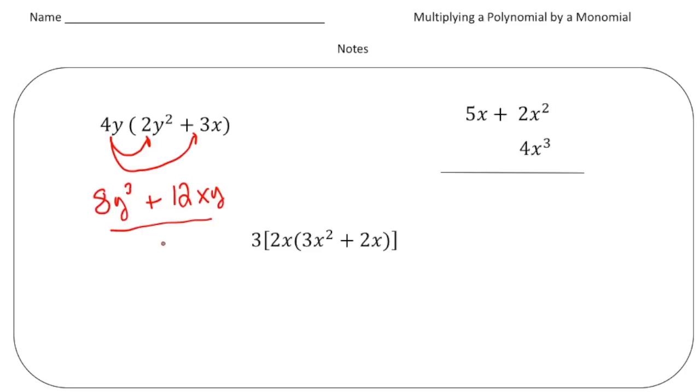And there it is. All right, now this is a horizontal type of a setup. Now this is the same type of problem, except it's vertical. So again, here's our monomial, 4x cubed.